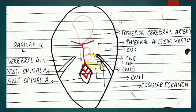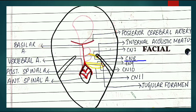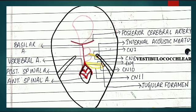From the pontine medullary junction - that is where the medulla and the pons meet - two nerves are arising. Those nerves are the seventh cranial nerve and the eighth cranial nerve. The seventh cranial nerve is your facial nerve and the eighth cranial nerve is your vestibulocochlear nerve. So CN VII and VIII arise from between the pons and medulla.